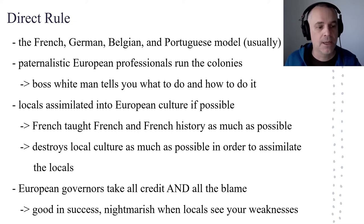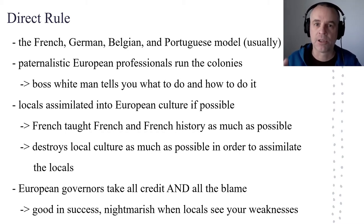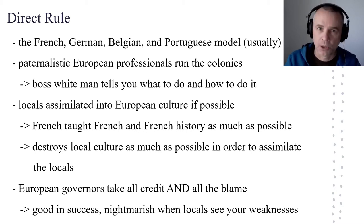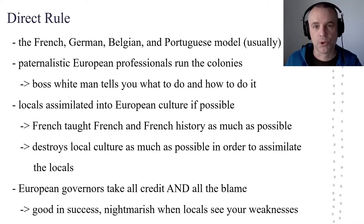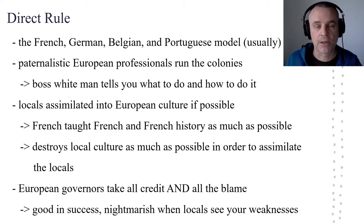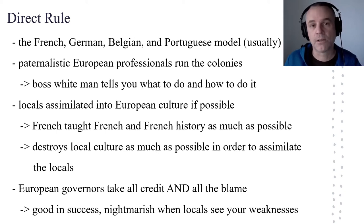That is literally the way the Europeans saw it at this time. And the benefit of this is that you, the European governors, get to take all the credit. Sometimes they did things that were actually good even in the process of this whole nightmare of imperialism — you built roads, you built hospitals, you built a dam that provides electricity. Obviously the Europeans could take credit for that and did. They were like, 'See, this is why we should run everything because we do all these great things for you.' The problem with direct rule is that you also take all the blame. If things go wrong, you the Europeans are to blame. Direct rule was always good in success, but it became a real problem when local African people saw the weaknesses or failures of, say, school building campaigns or medical campaigns. You had all the power, but you would then get all the blame if things went wrong.